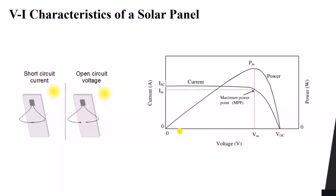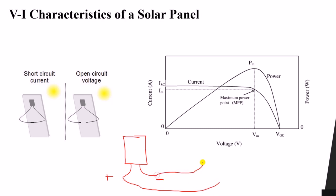Welcome everyone to this lesson in our course on solar energy. In this lesson we will discuss more about solar panels. Any solar panel has two terminals: one positive terminal and one negative terminal. When you connect these two to a bulb or a resistor, a current will flow from the positive going to the negative terminal. This can be considered as a voltage source, like a battery.